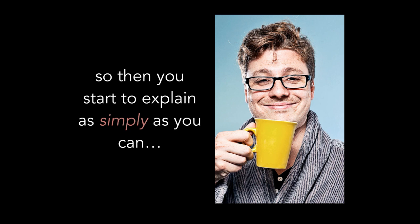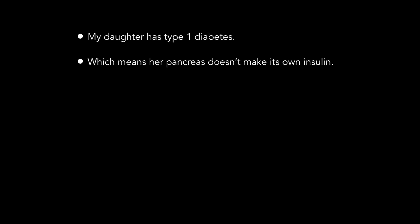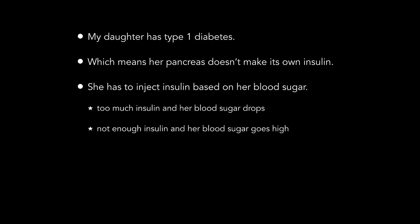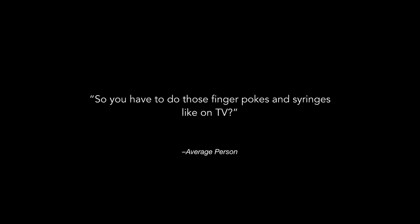It also ties into what happens when you try to explain type 1 diabetes to people outside the community. You learn to explain it really simply: my daughter has type 1 diabetes, which means her pancreas doesn't produce its own insulin. She has to inject insulin based on her blood sugar — if she gives too much, her blood sugar drops; if she doesn't give enough, it goes high.